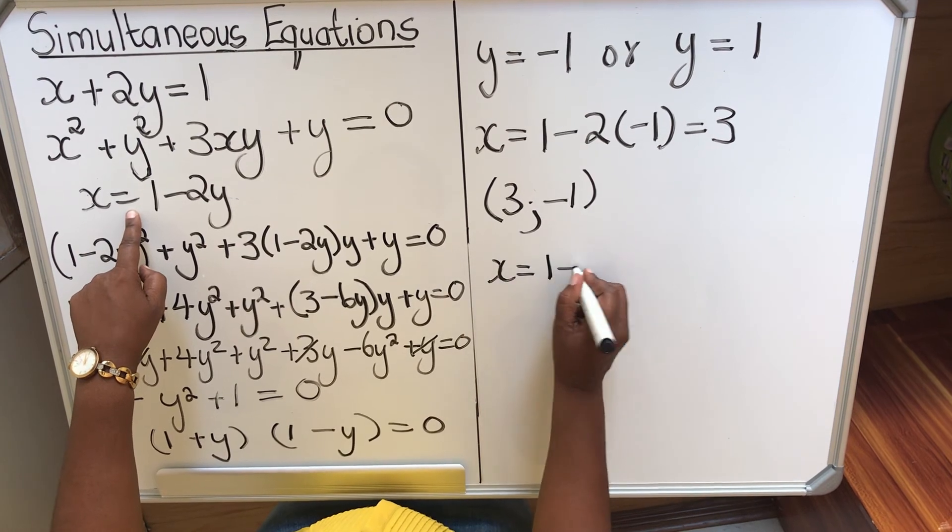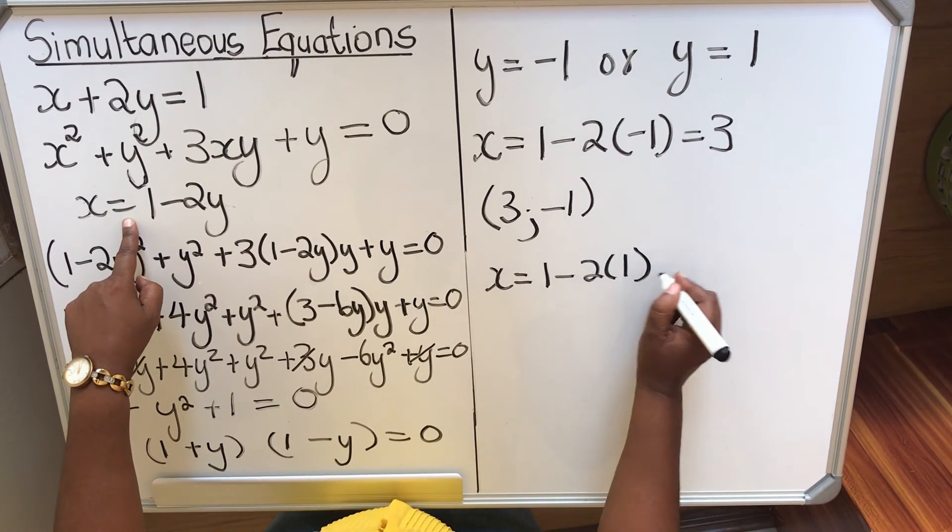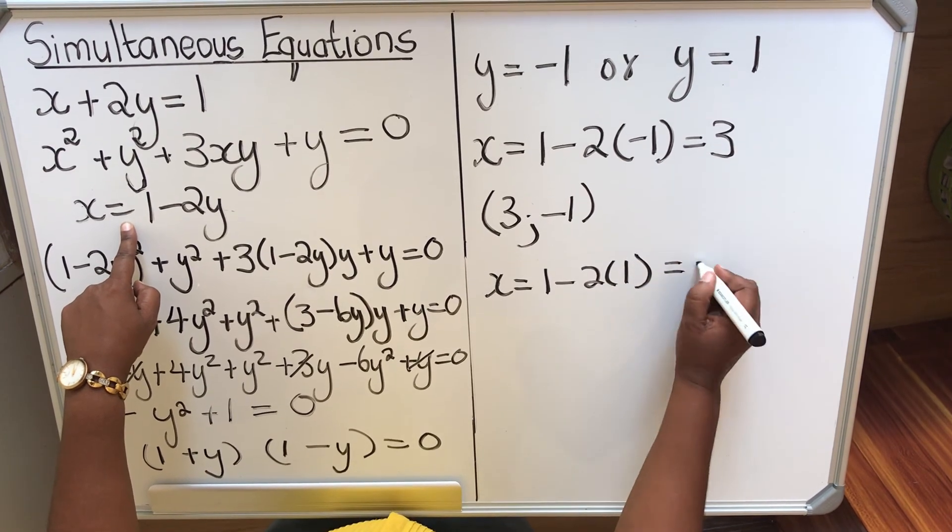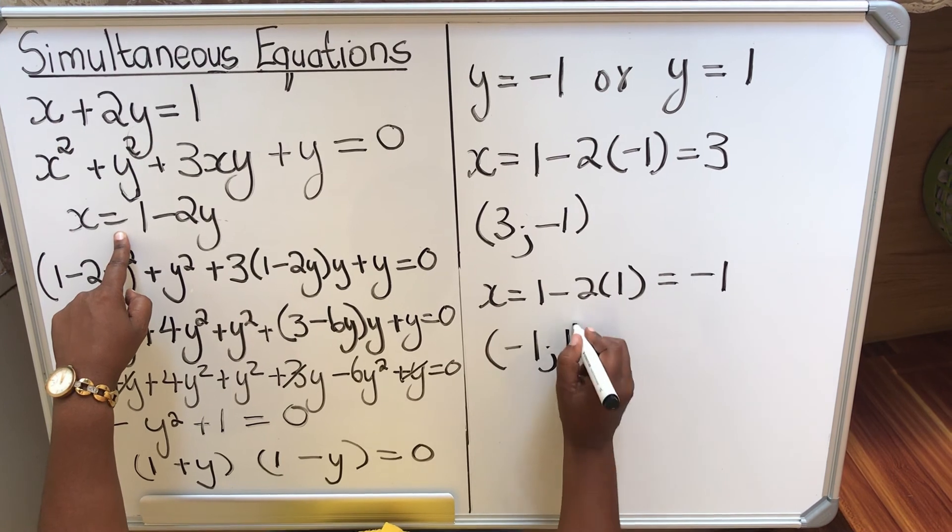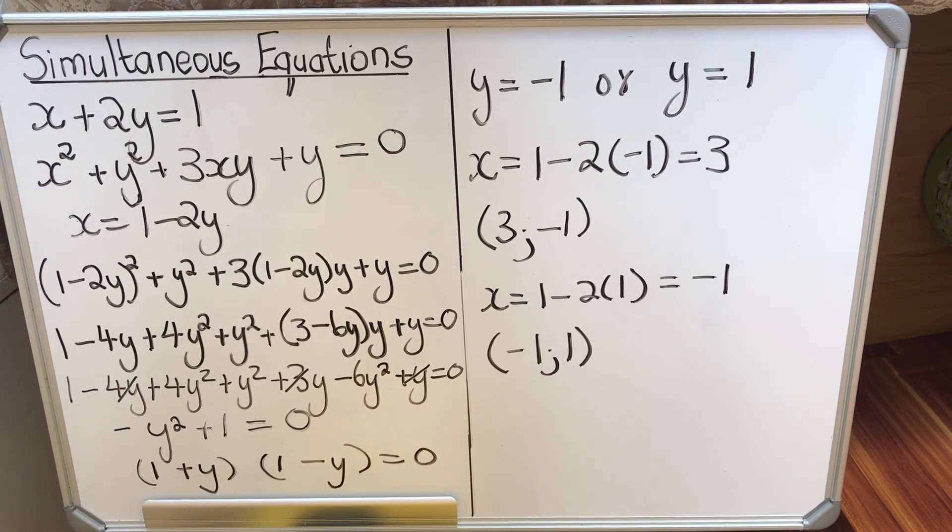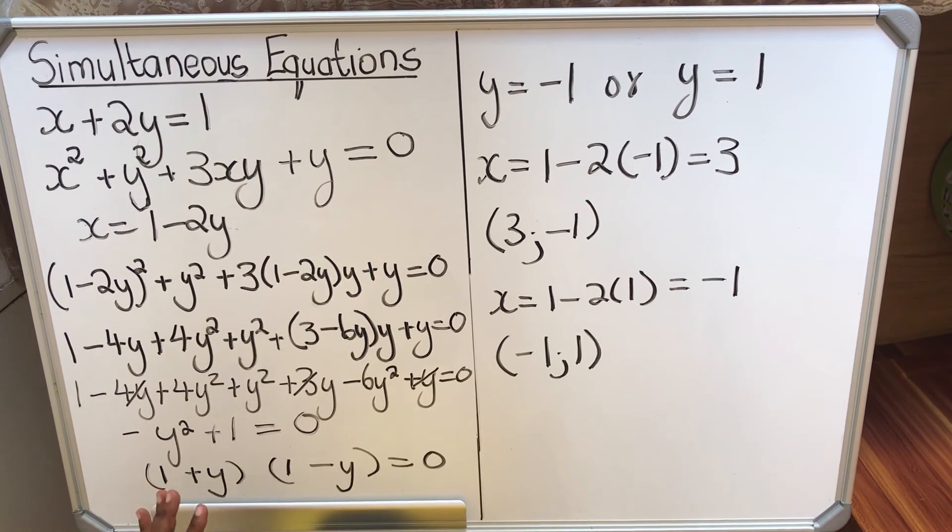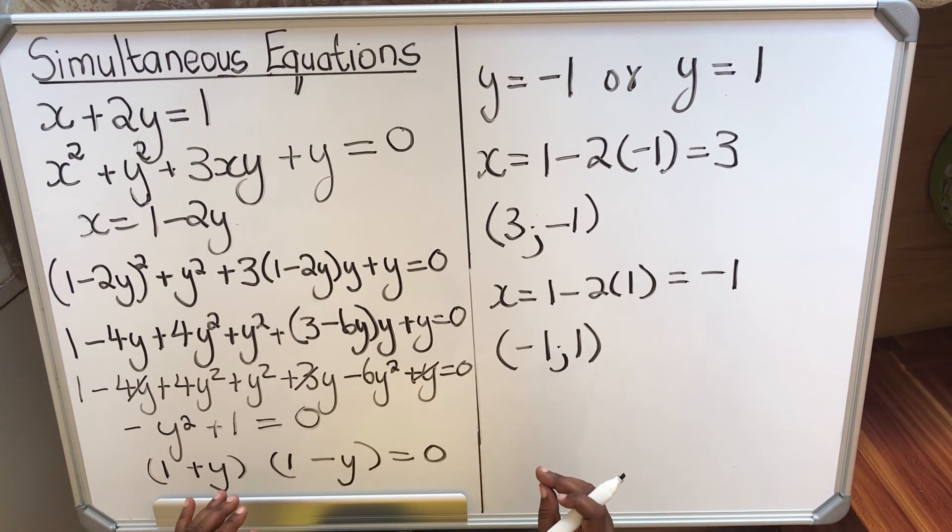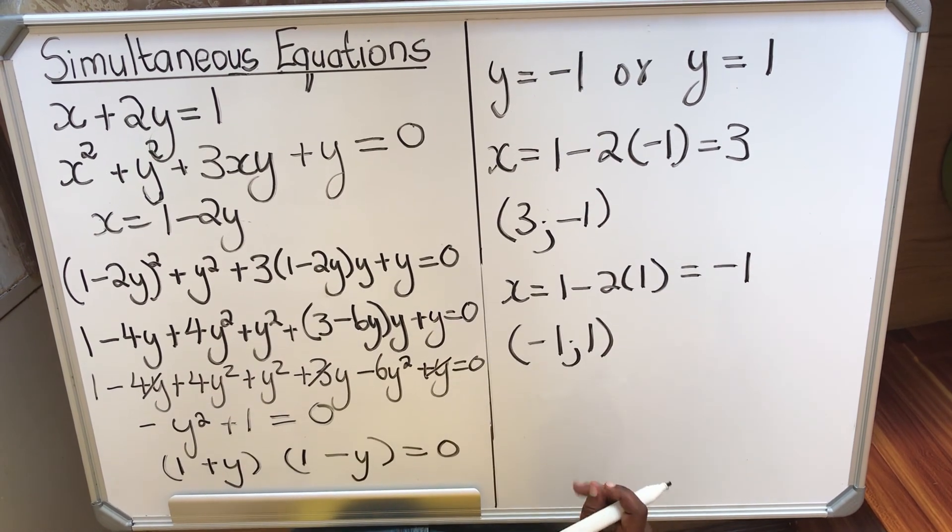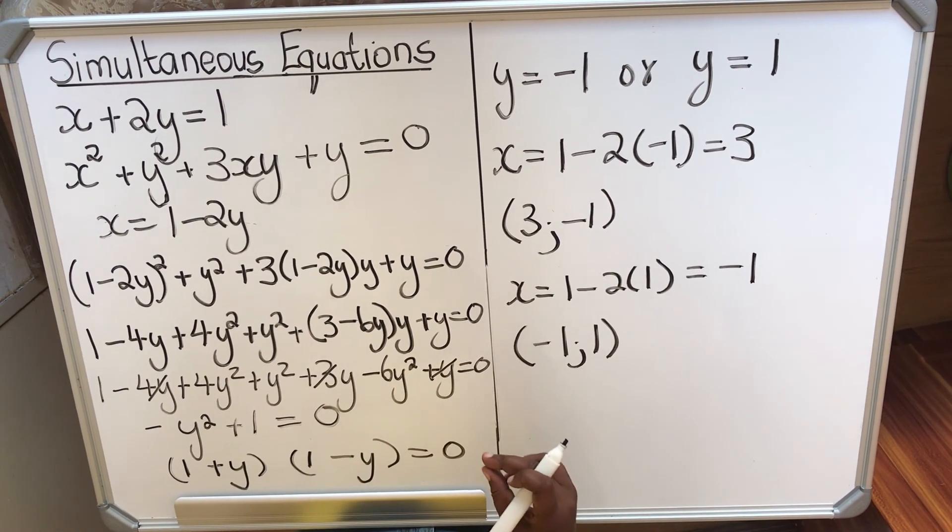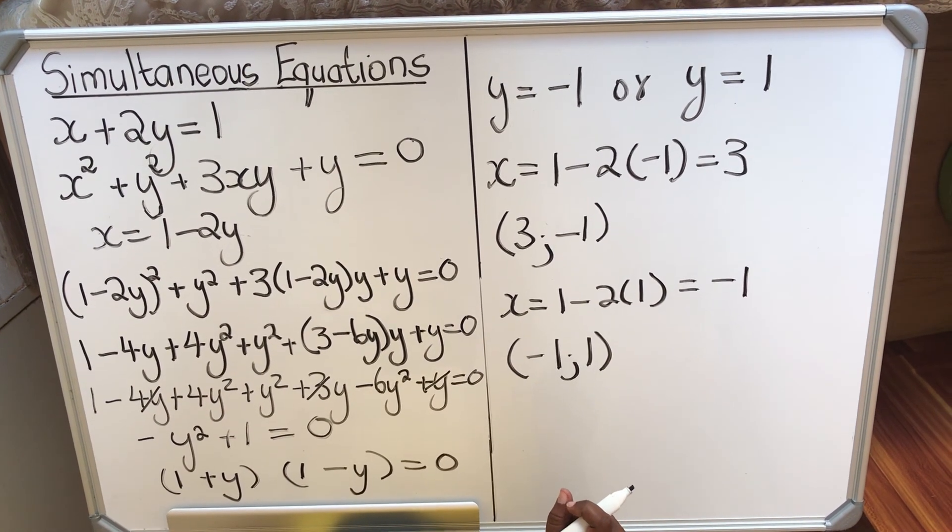Then I do the other one. x equals 1 minus 2 times 1, my y is 1 now. So my answer will be minus 1. When x is minus 1, y is 1. So this is not a difficult section. Unfortunately, it counts a lot of marks. So grade 11s, practice, practice, practice and get all either in some question papers is 5 marks, in some papers is 6 marks. It's 6 marks that you can actually get. Thank you for watching. If you have not subscribed yet, please subscribe.